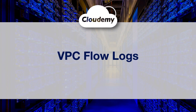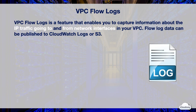Hey guys, welcome back. I'm Jay. In this episode, we're going to look at VPC flow logs. VPC flow logs is a feature that enables you to capture information about the IP traffic going to and from network interfaces in your VPC. Flow log data can be published to Amazon CloudWatch Logs or Amazon S3. After you've created a flow log, you can retrieve and view its data in the chosen destination.